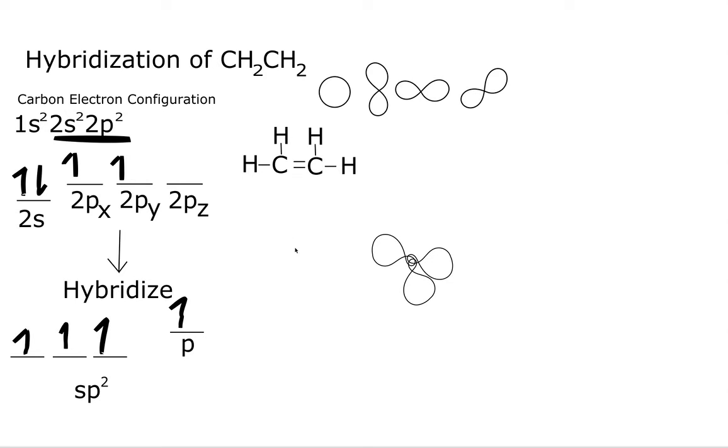Now we're going to need a p orbital because of this right here. We have one p orbital. So I'm going to take this p orbital. I'm just going to make it bigger just to over exaggerate it. It doesn't mean it's in a higher energy level. It's just so you can see the pi bond a lot easier.